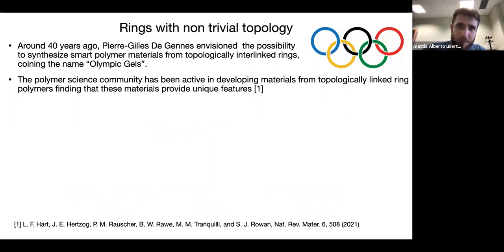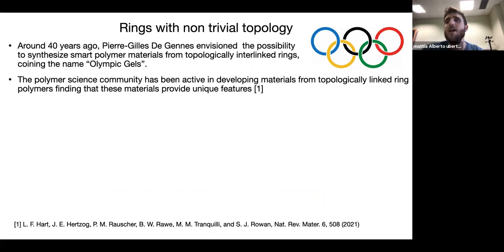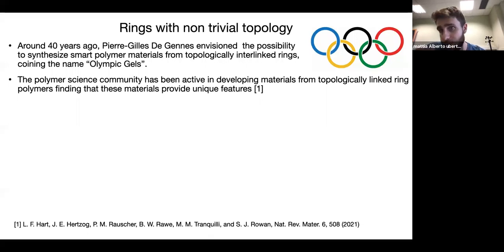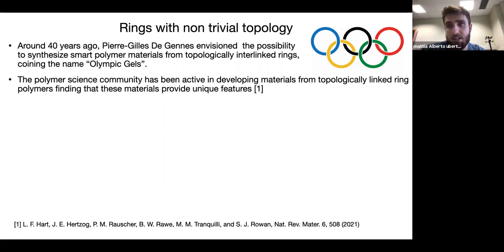The field of study of rings with non-trivial topology can be traced back to 40 years ago. It started from Pierre-Gilles de Gennes, when he envisioned the possibility of synthesizing polymer materials from topologically interlinked rings. From that, he coined the name 'Olympic gels' because such a structure would resemble the Olympic symbol, and from that moment on, both experimentalists and simulators started to characterize, synthesize, and model this kind of material.